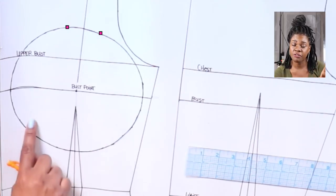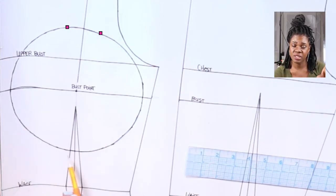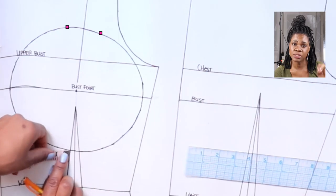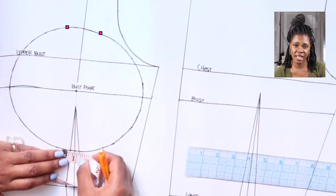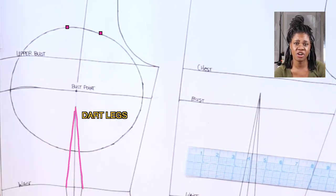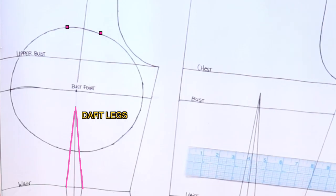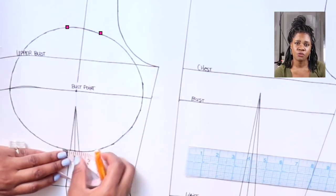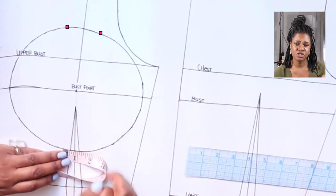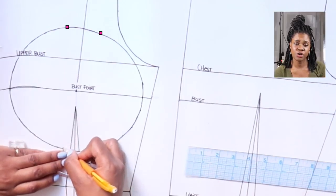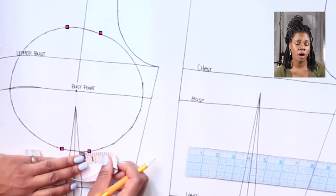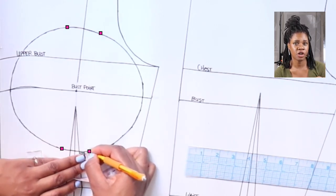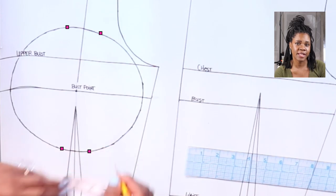Go to the bottom of your bust radius circle where the dart legs intersect with the circle. The dart legs are the lines I'm referring to here. From this intersection you're going to measure a half inch and make a mark on both sides of the dart legs.